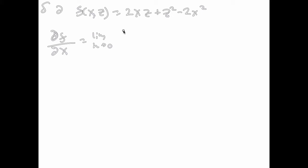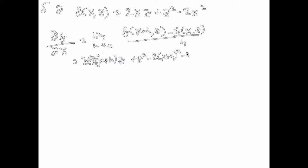So we can go through and apply our definition as before with no real problem. So here we have f(x+h, z). So we're leaving z as a constant. Minus f(x, z), divided by h. Here we're going to have 2(x+h)z, treating as a constant, plus z², still a constant, minus 2(x+h)², minus the original function back again.